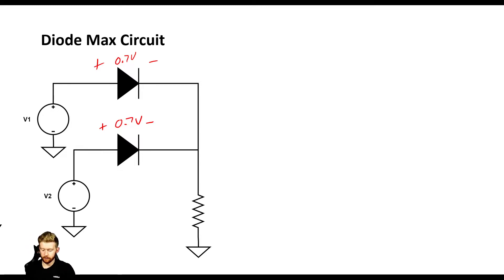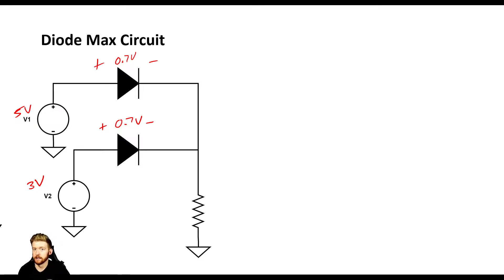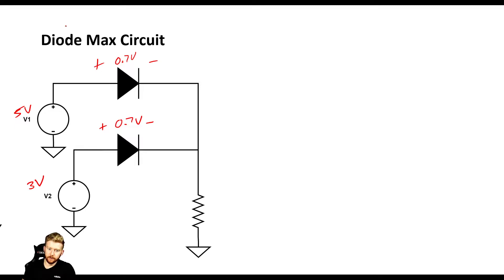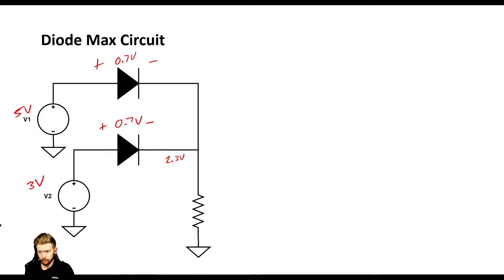Let's throw in some random numbers. Say V1 is 5 volts and V2 is 3 volts. We know the maximum is 5 volts, but we need to figure out how the electronics identifies that. Starting with V2: if 3 volts is conducting current, there would be a 0.7 volt drop, giving us 2.3 volts at the output node. For V1: if 5 volts is conducting, we'd have 4.3 volts at that same node.